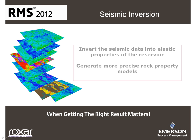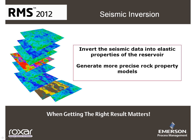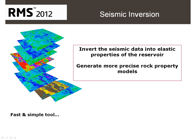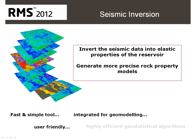Seismic inversion is a sophisticated process of inverting the seismic data into elastic properties of the reservoir, which helps in the generation of a more precise rock property model. RMS 2012 now has a fast and simple stochastic seismic inversion tool, which can be used as an integrated part of the geomodelling workflow. The automated process is user-friendly, fast and accurate, with the implementation of highly efficient geostatistical algorithms.